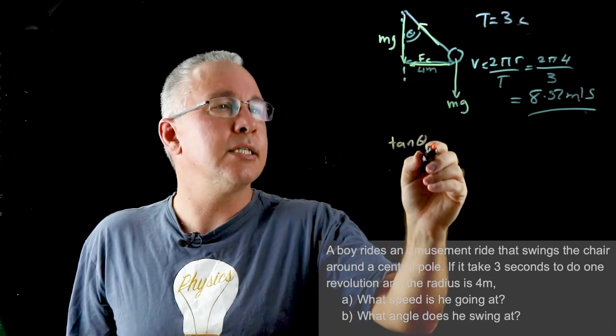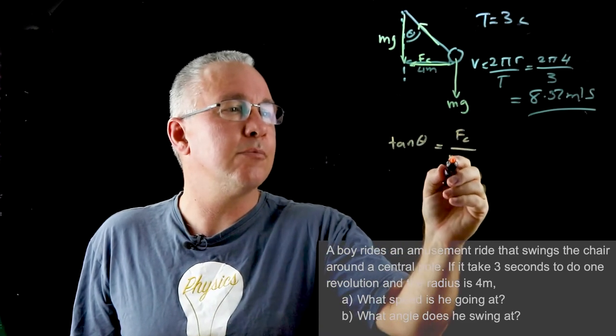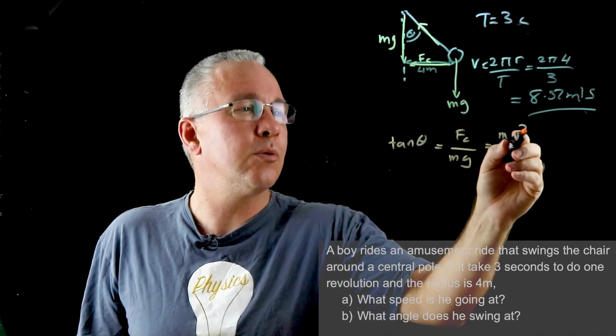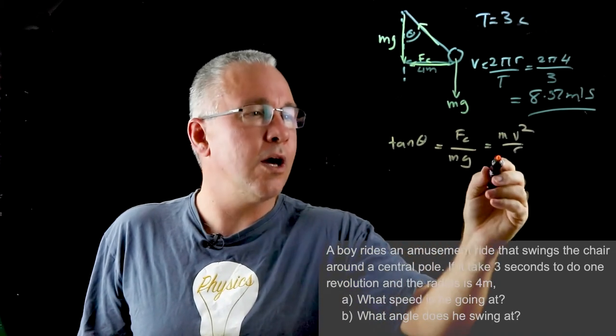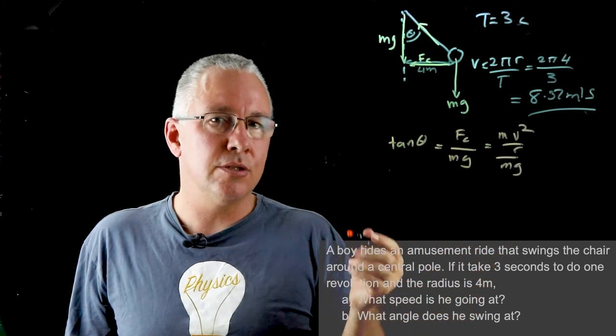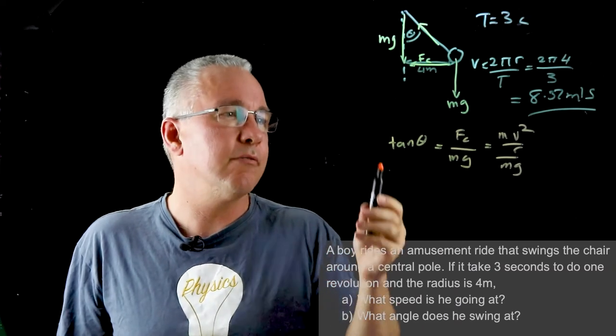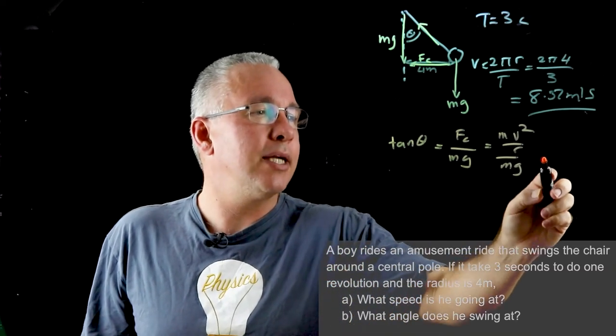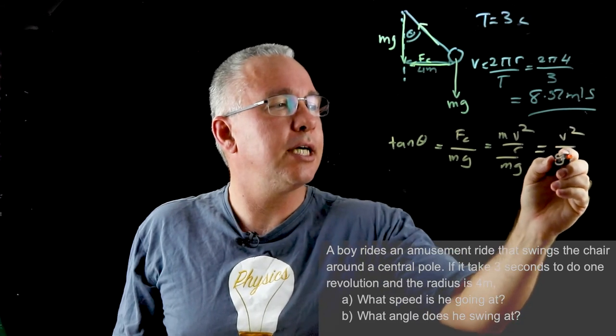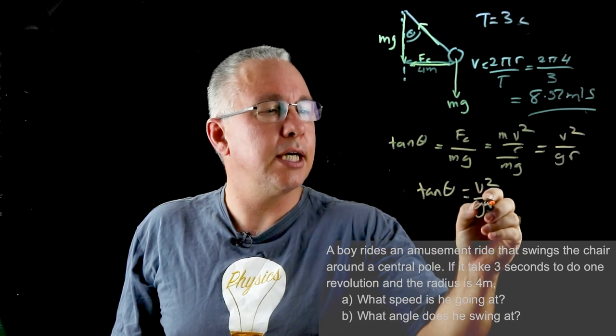The tan of the angle is equal to the opposite which is our fc over our mg. But our fc is equal to mv² over r all over our mg. And you'll notice now that the m's cancel out. In other words this situation is independent of the mass of the boy in this case. So what we end up getting is equal to v² over gr. So tan θ is equal to v² over gr.